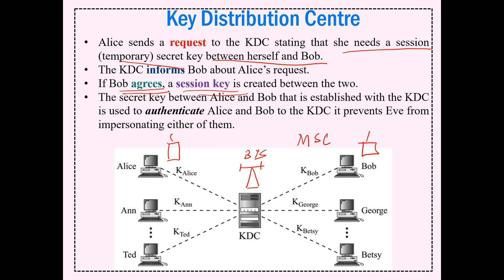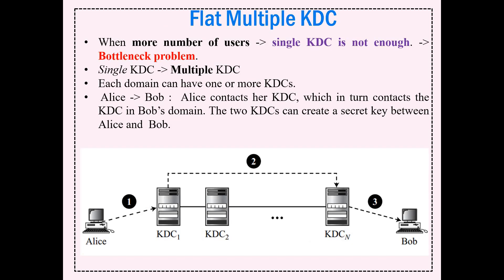The MSC or BTS works as something like the KDC - a similar process happens there. But the point is that you are always dependent on KDC for key authentication and generation. When the number of users increases, a single KDC is not enough. That is why we have multiple KDCs - KDC1, KDC2, and so on.